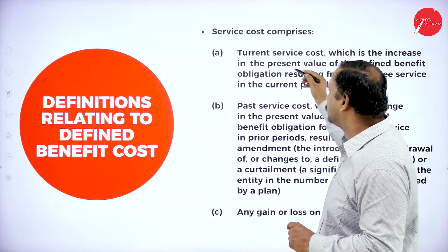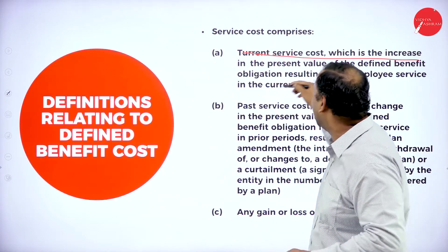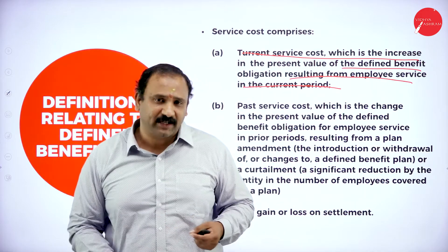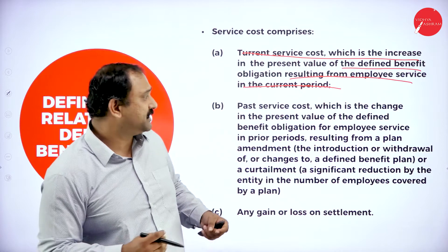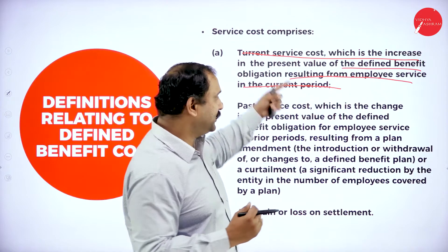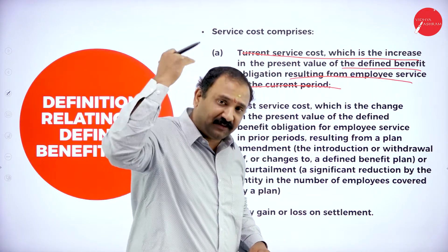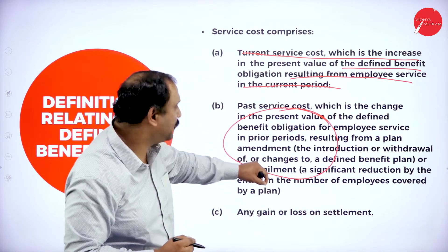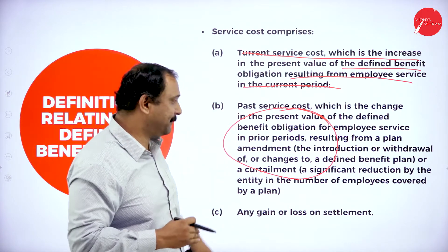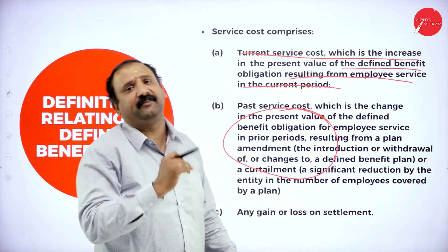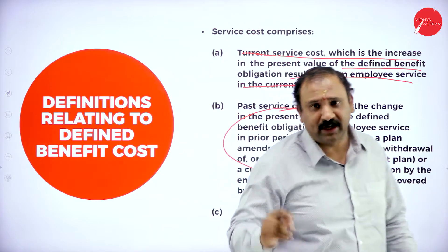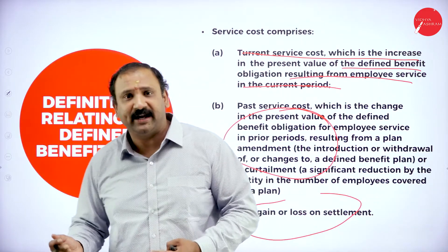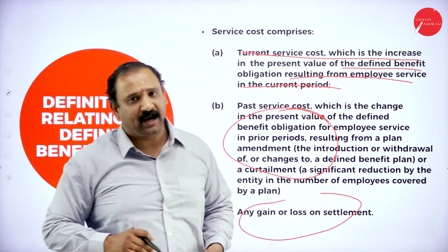The definitions related to benefit cost: first, service cost comprises the current service cost, which is an increase in the present value of the defined benefit obligation resulting from the employee service in the current period. Every time the employee is working for the organization there is a current service cost rising because that is an obligation — you are taking service from the employee so you need to pay for it. Past service cost is the present value of the defined benefit obligation for employee service in the prior period resulting from a plan amendment. Whatever services the organization has extracted from the employee in the past also have to be accounted for and given back to the employee. Any gain or loss on settlement has to be recorded in the accounting — whether you gained something or made a loss by paying all the benefits, that has to be accounted in the books of accounts.